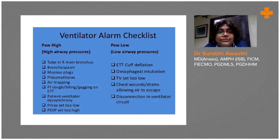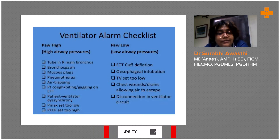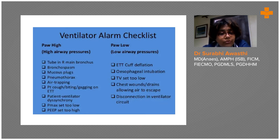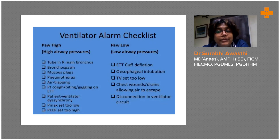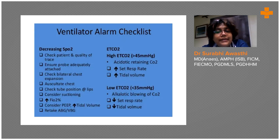Every ventilator has factory alarm settings, but every patient is different. A post-op patient with no lung issues may be fine with a peak airway pressure alarm of 30, but a severe COPD or ARDS patient will keep alarming at that setting. When alarms are not set correctly, staff will start ignoring them — this is called alarm fatigue — and they may miss a real, clinically important alarm. It is essential to set alarm limits for each patient individually.